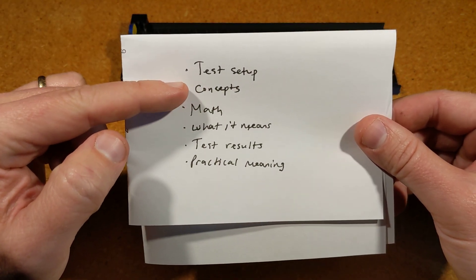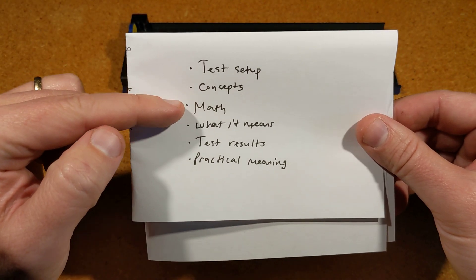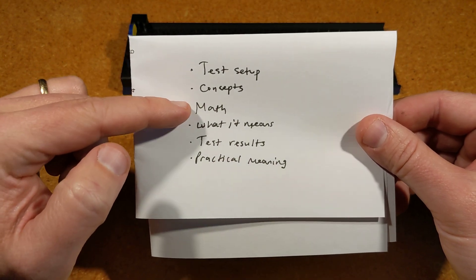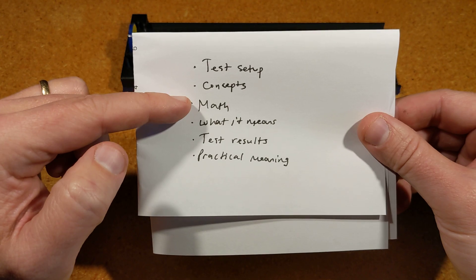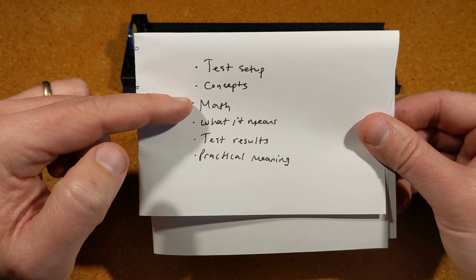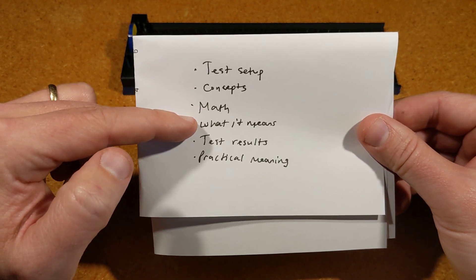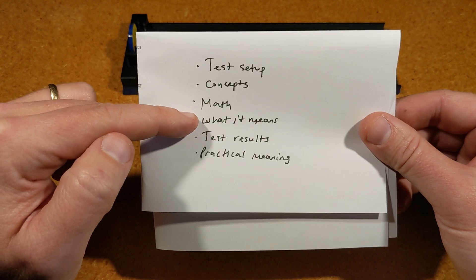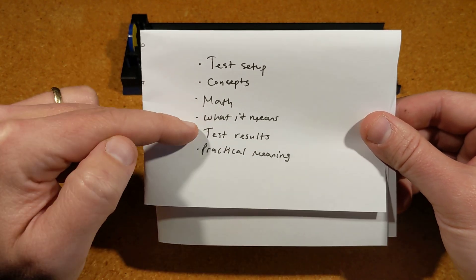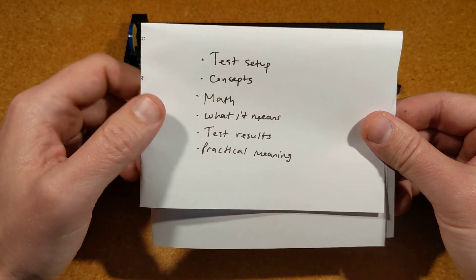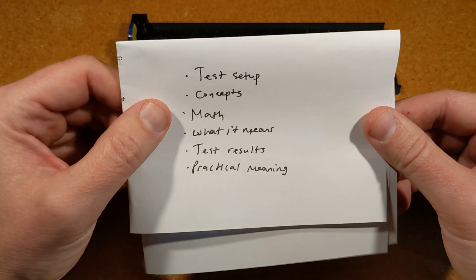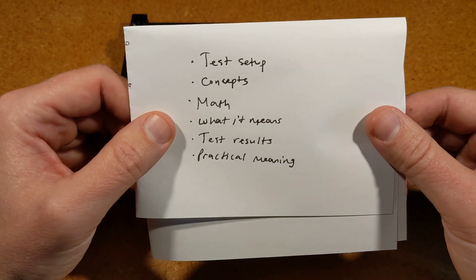I'll explain the concepts that it's going to try to show, some of the math behind it - but don't worry if you're not interested in that, you can gloss over it. I'll try to explain it conceptually as well. Then I'll explain what that means in the real world, what the test results show, and finally, practically, how to understand these concepts in the real world when you're potentially doing measurements with a radiation detector.